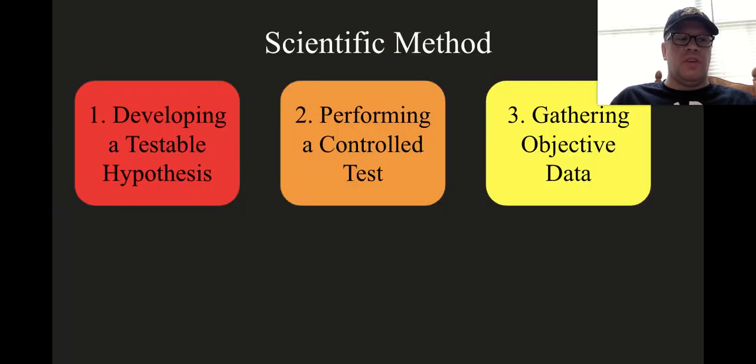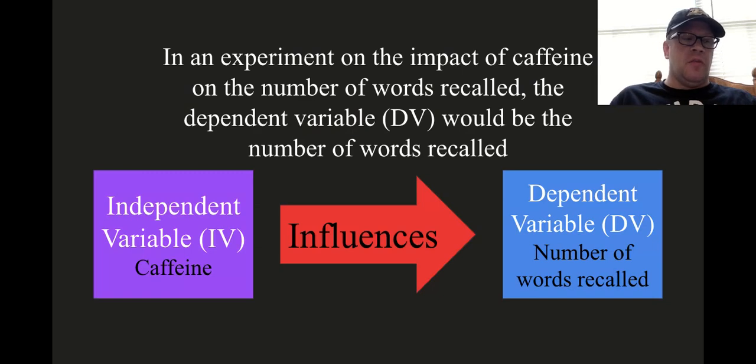The third step of the scientific method is gathering objective data. And by data, these are pieces of information gathered by a researcher through the controlled testing of a hypothesis. The measured outcome of responses of the subjects of a study is going to be referred to as the dependent variable.